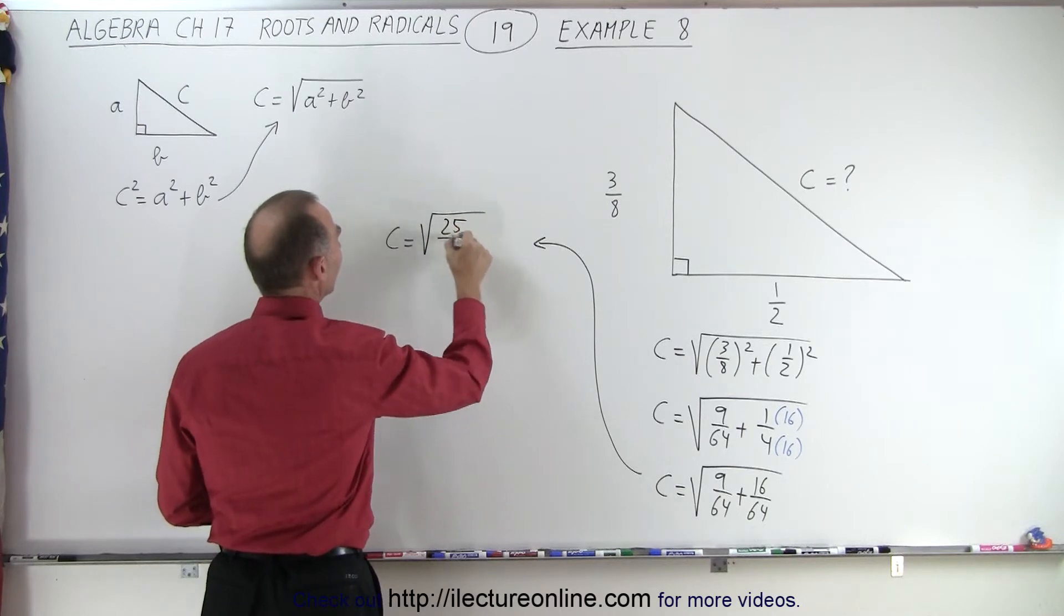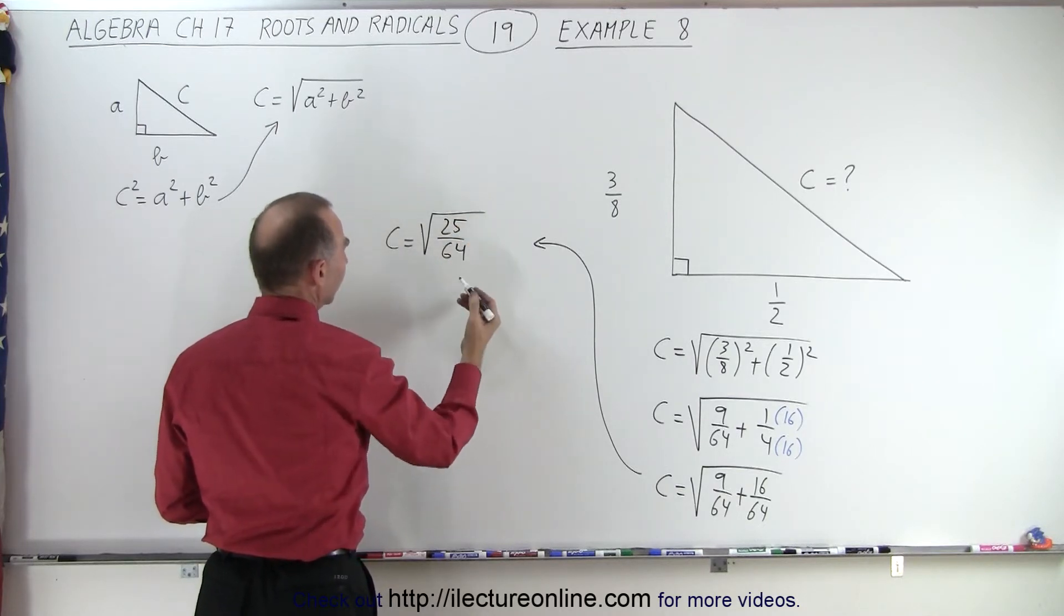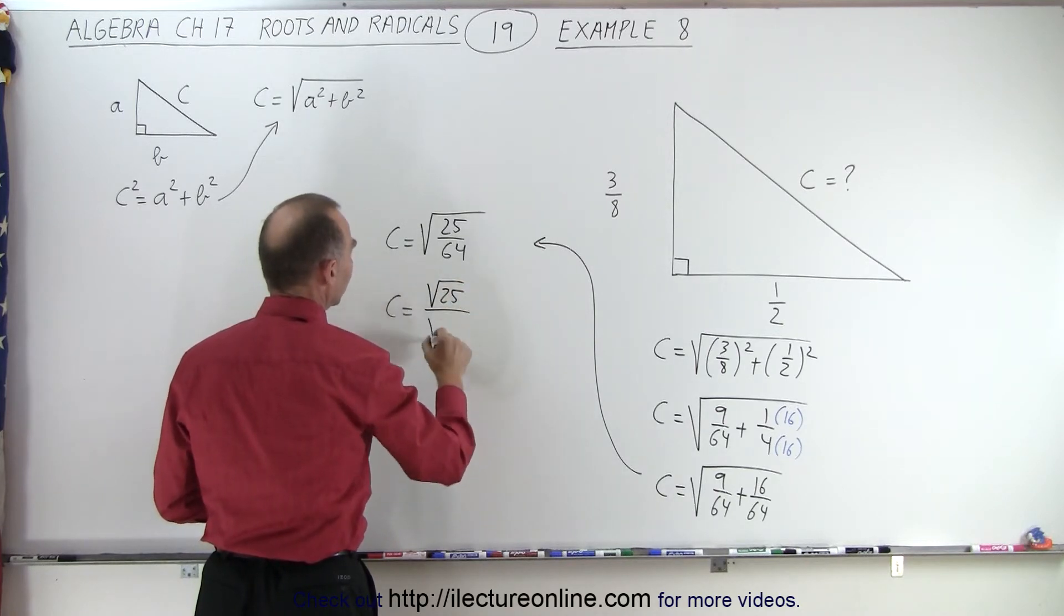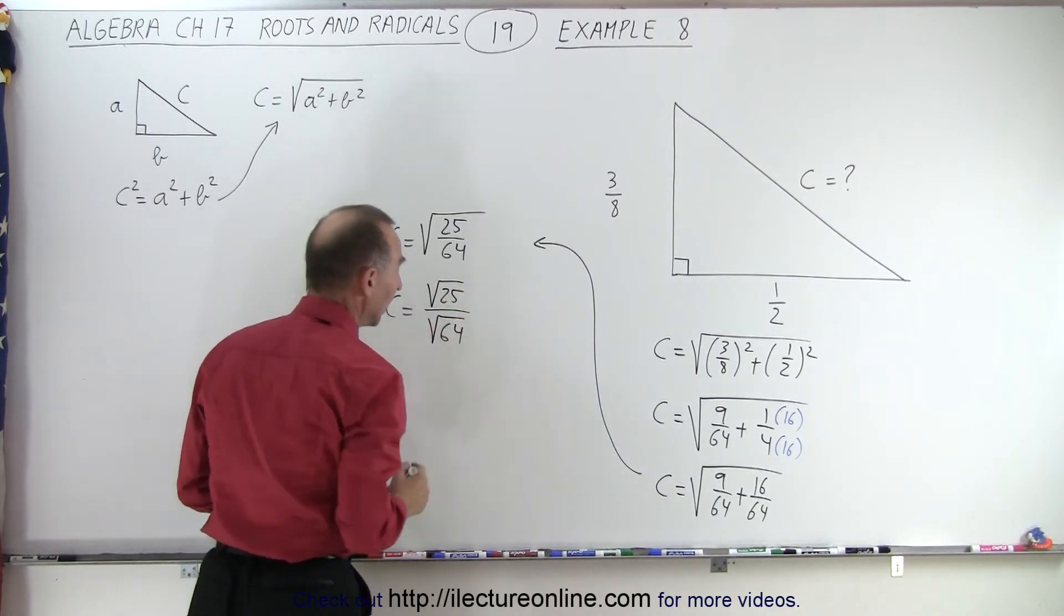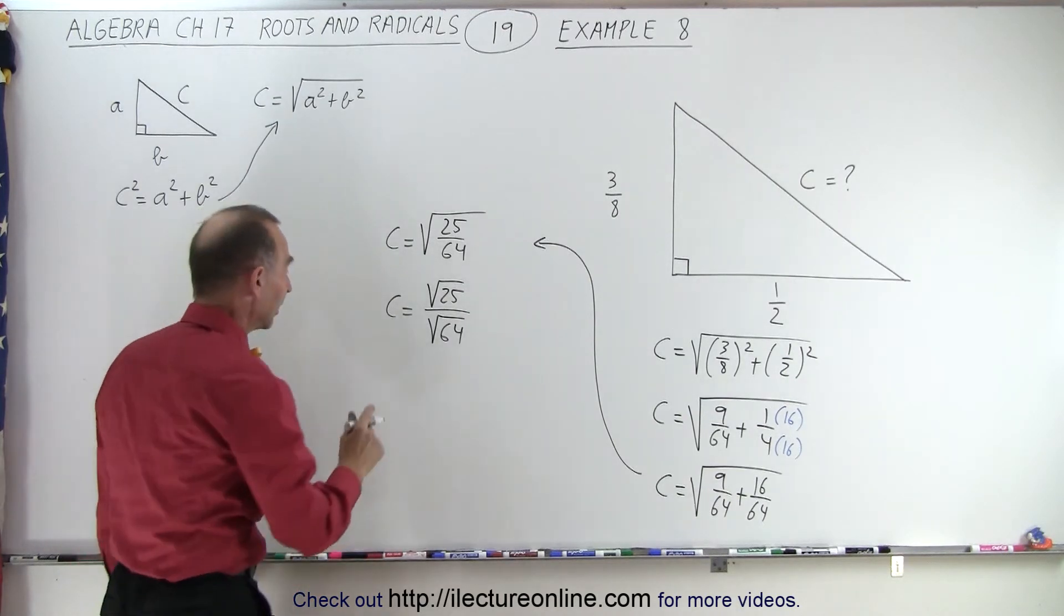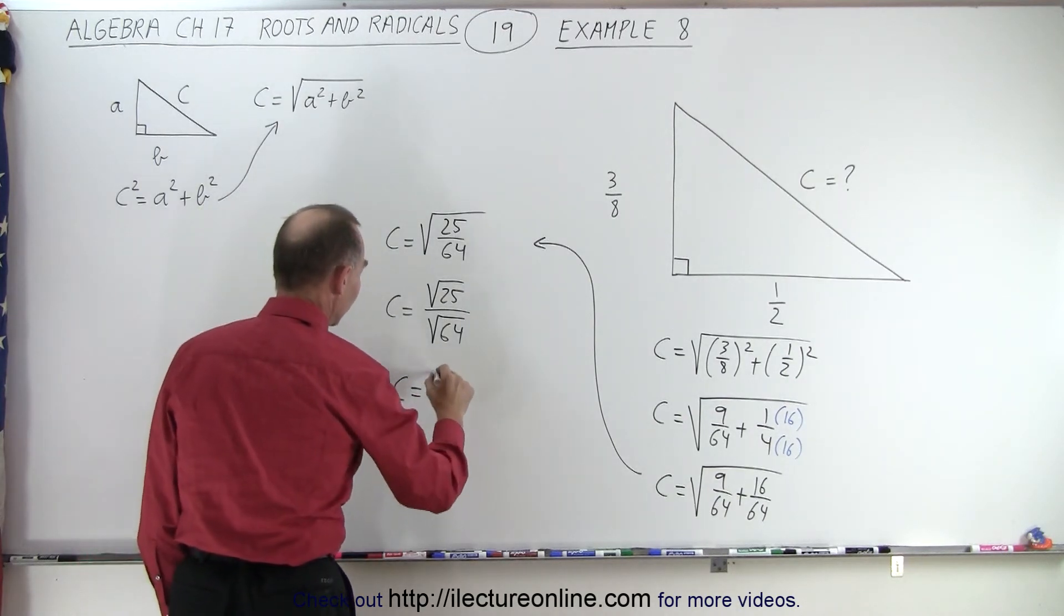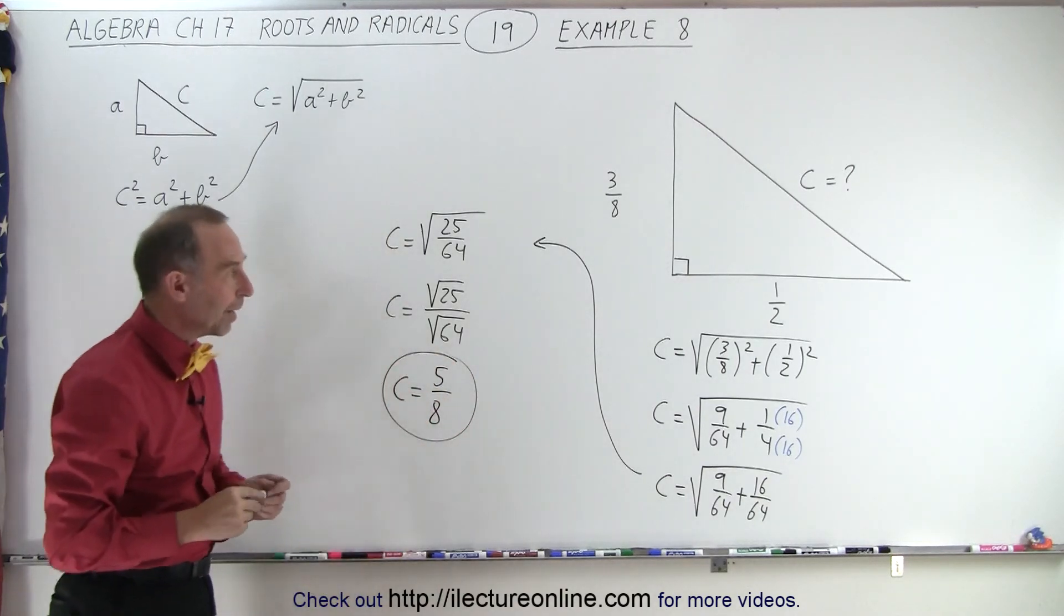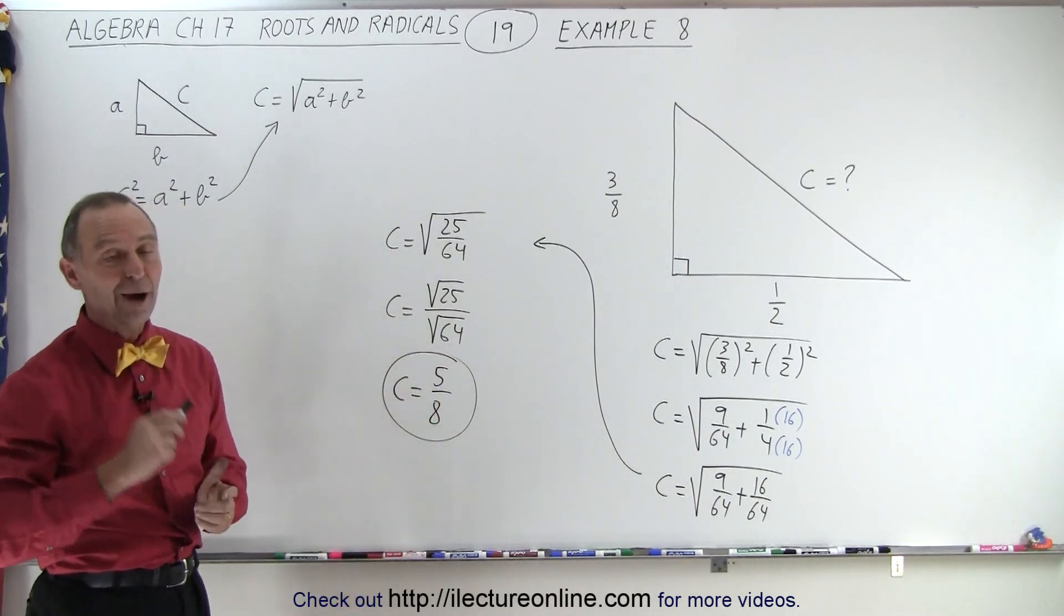And of course, using the rules, I can say that c is equal to the square root of 25 divided by the square root of 64. And we know what those are. We can then say that c is equal to 5 over 8, which is the length of the hypotenuse. And that is how it's done.